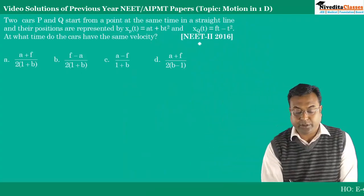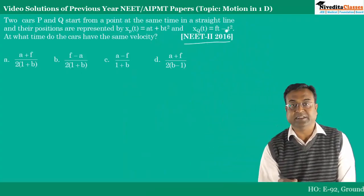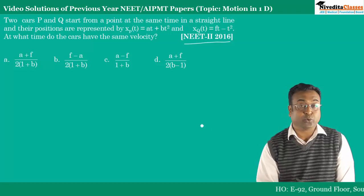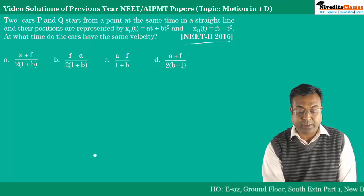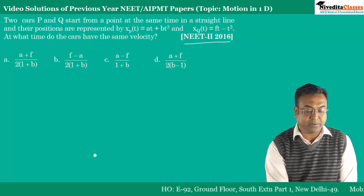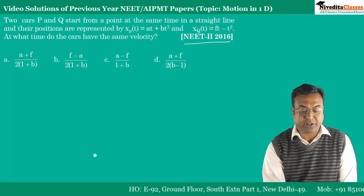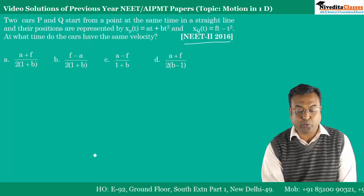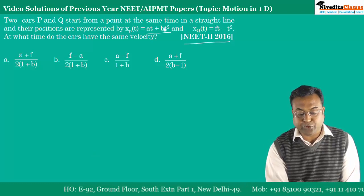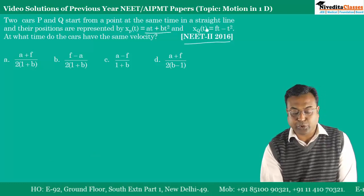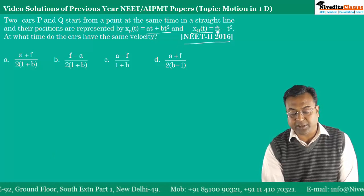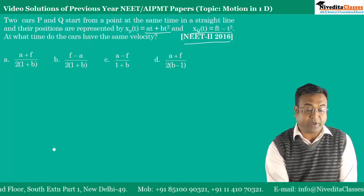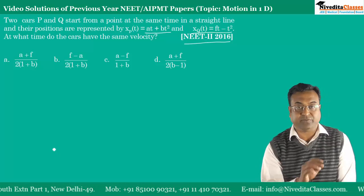This question was asked in NEET 2016. Two cars P and Q start from a point at the same time in a straight line, and their positions are represented by x_P(t) = At + Bt² and x_Q(t) = Ft - t². We have to find at what time the cars have the same velocity.